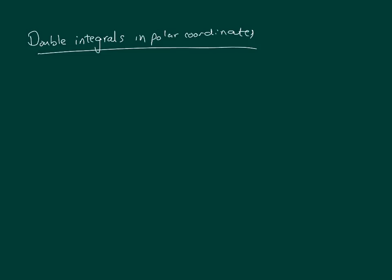In this video, we're going to look at double integrals in polar coordinates. Let me reintroduce you to polar coordinates — you've seen them before. x equals r cosine theta and y equals r sine theta. These are the polar coordinates. Essentially, what's going on is a change of variable, where we go from the xy coordinate system to the r-theta coordinate system.